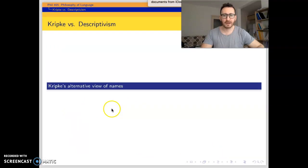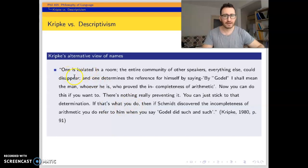Let's now go on with Kripke's alternative view of names. We have seen Kripke's arguments against descriptivism. And he says we may still be a descriptivist if you wish that way. Like he states in this quote: One is isolated in a room. The entire community of other speakers, everything else could disappear. And one determines the reference for himself by saying, by Gödel, I shall mean the man, whoever he is, who proved the incompleteness of arithmetic. Now you can do this if you want to. There is nothing really preventing it. You can just stick to that determination. If that's what you do, then if Schmidt discovered the incompleteness of arithmetic, you do refer to him when you say Gödel did such and such. You may use language in this way, but it seems unnatural.